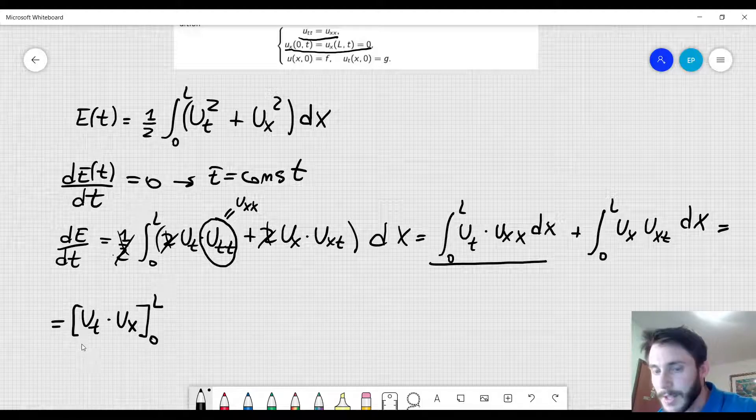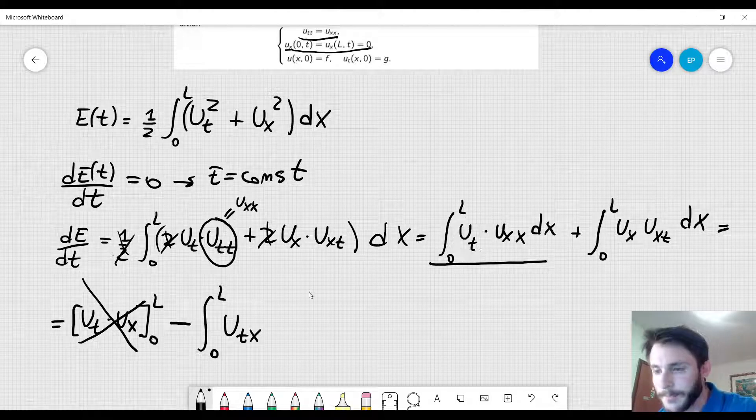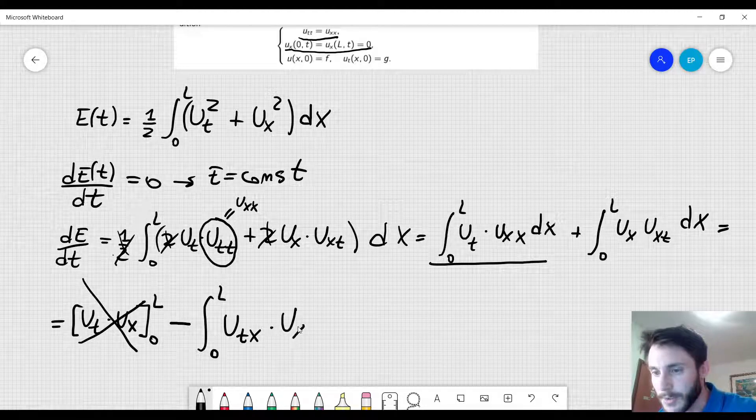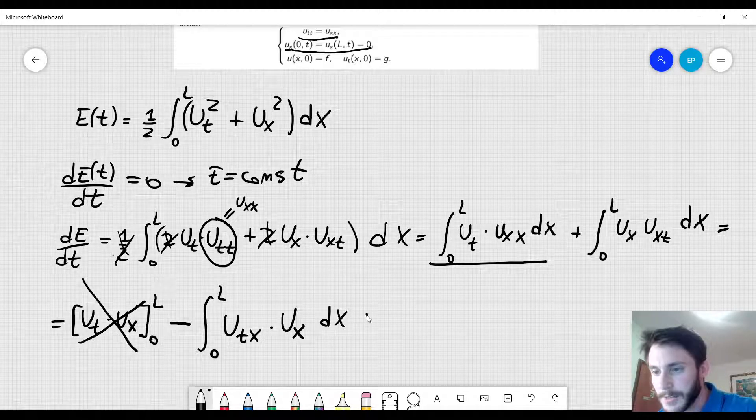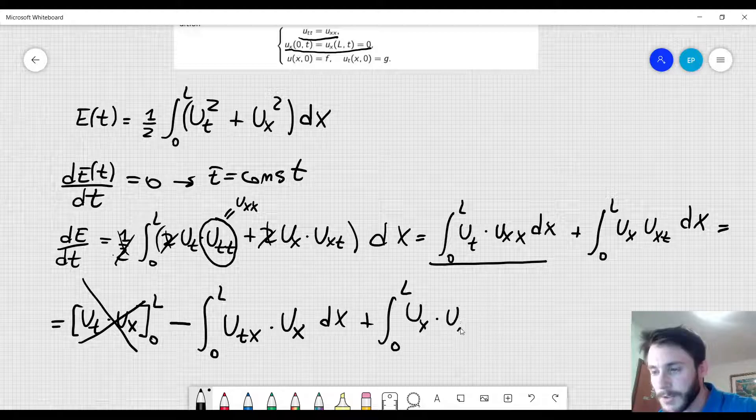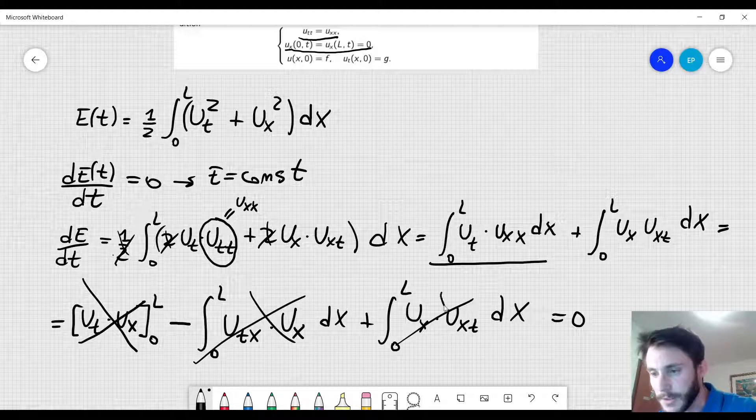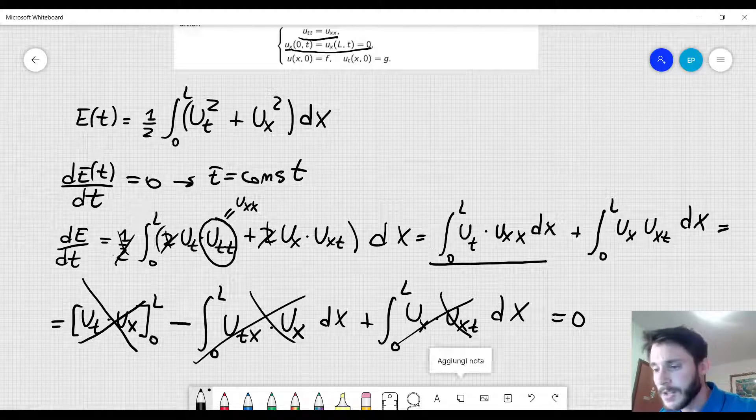So this quantity here will give 0 contribution and then we have to subtract the integral from 0 to L of u_tx, so we have to take the derivative of this function with respect to x and multiply it by u_x dx plus integral from 0 to L u_x times u_xt dx and this of course is equal to 0 now. We can see that easily because this term cancels this one and therefore the energy is conserved.